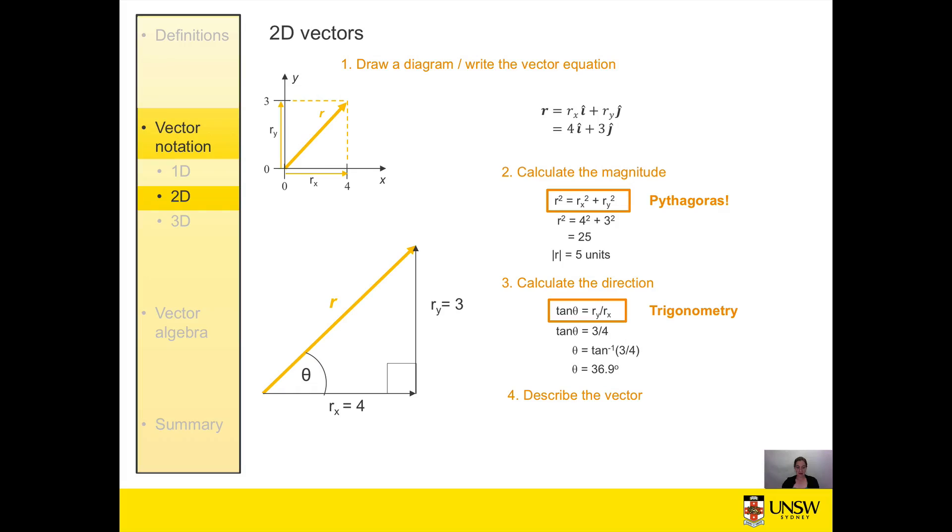The final step is to describe our vector. In this case we could say we have a magnitude of 5 units in a direction of positive 36.9 degrees from the x axis.